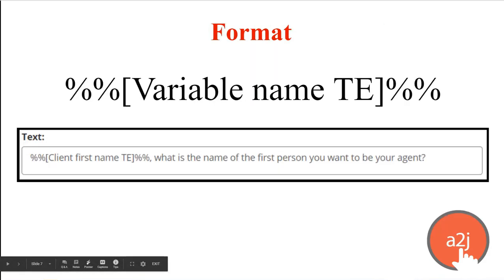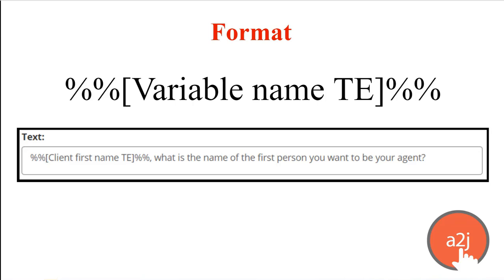Here's the format for including a variable macro in an A2J guided interview. Where you want to use it, you type in double percent sign, bracket, the name of the variable, close bracket, double percent sign.